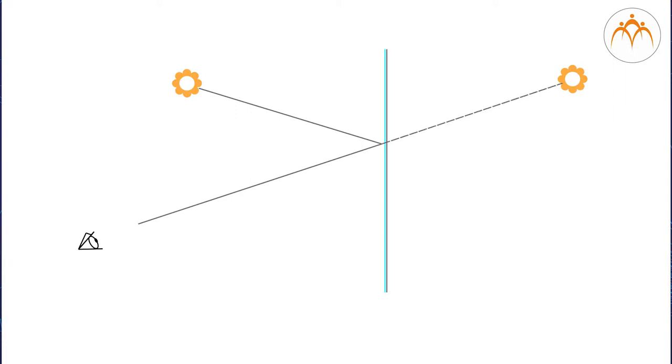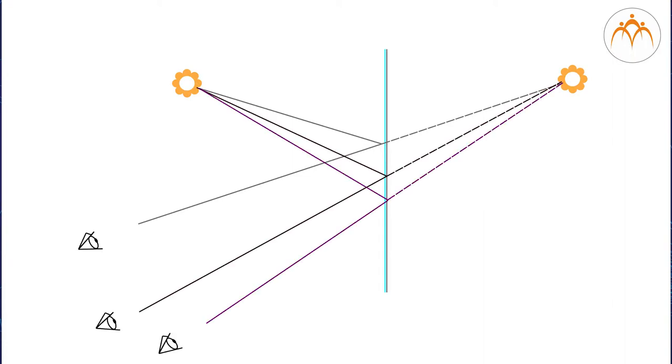When each line of sight is extended backwards, each line will intersect at the same point. This point is the image point of the object. Since there is only one image for an object placed in front of a plain mirror, it is reasonable that every sight line would intersect in a single location.